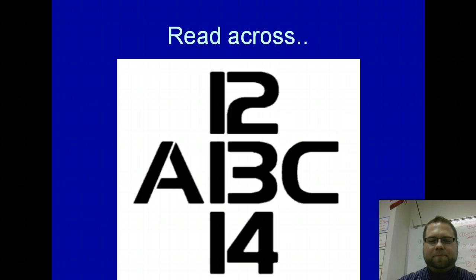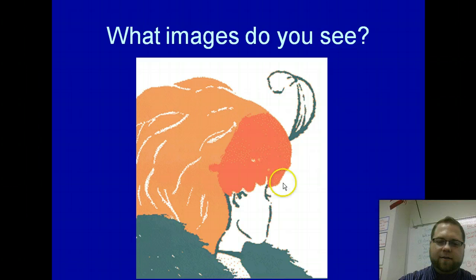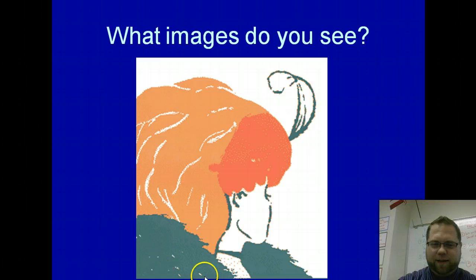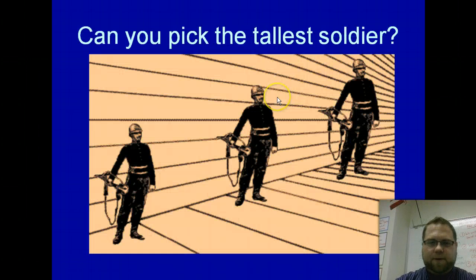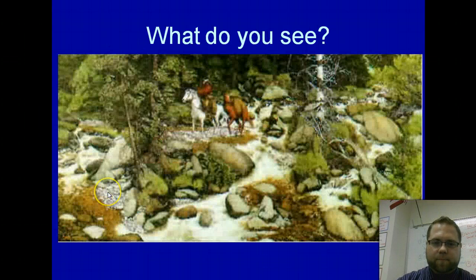If you read across ABC, no big deal. But when you try to read down, you see that that's a 13. Same thing here with the images — we've got another old lady and then a bashful young lady and then an old lady wearing a big furry boa with antennas apparently. And the tallest soldier — they are all the same size.